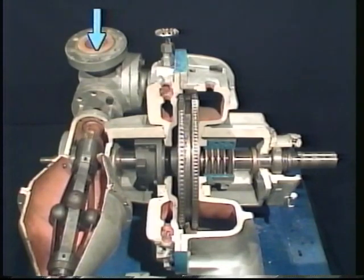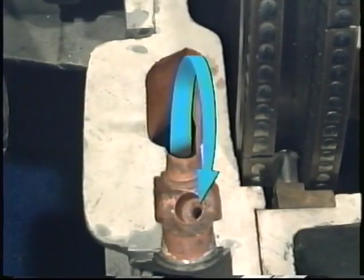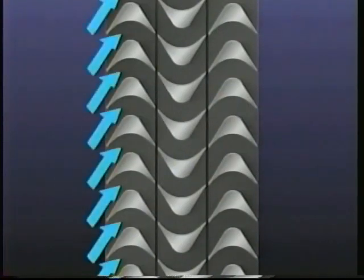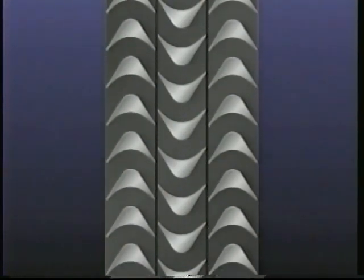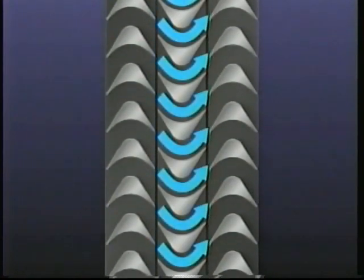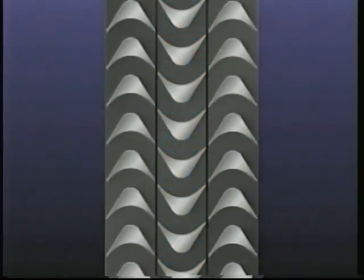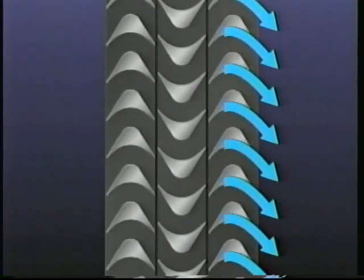The steam that has entered the steam chest through the governor valve moves on to the nozzles. As we discussed earlier, nozzles are the components that increase the velocity of the steam. The high-velocity steam from the nozzles is directed onto the first set of moving blades, which causes the blades and the shaft they're mounted on to turn. Then the steam flows through the fixed blades, which redirect the steam flow onto the next set of moving blades, allowing more energy to be extracted so the moving blades and shaft continue to turn.